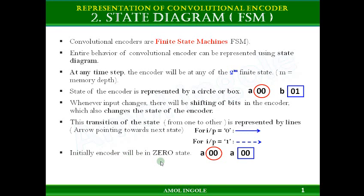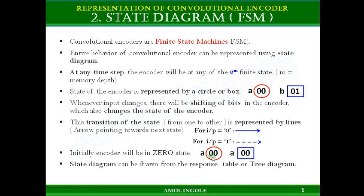Initially the encoder will be in the 00 state, so you have to start drawing the state diagram considering the encoder in the 00 state. The state diagram can be drawn from the response table, or it can also be drawn from the tree diagram which we discussed in an earlier video. Any input sequence can be encoded using the state diagram.